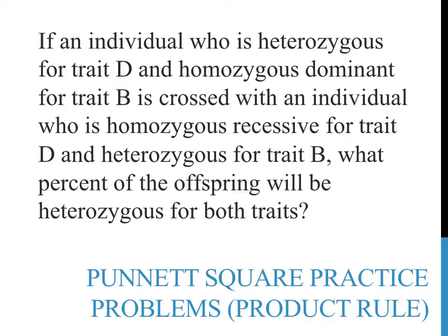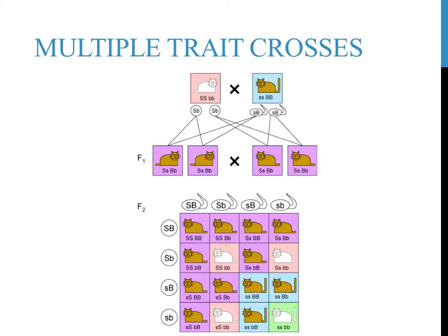If you have a background in basic Punnett squares, you might be able to read through the example problem above and determine the probability of having a child that is heterozygous for trait B or for trait D. But what is the probability that both of these events would occur together? Sometimes, instead of evaluating one trait in a cross between two parents, you might want to determine the probability of two, three, or even four different events occurring together.